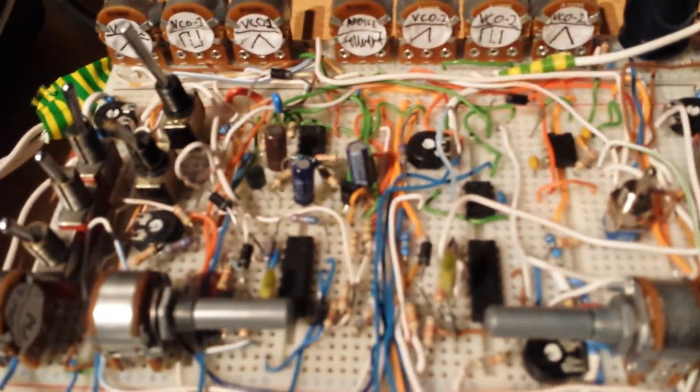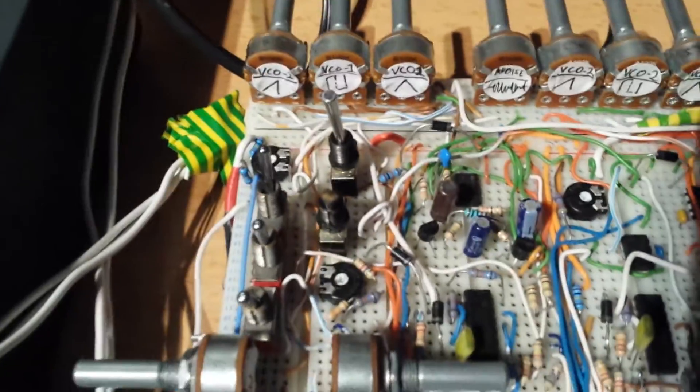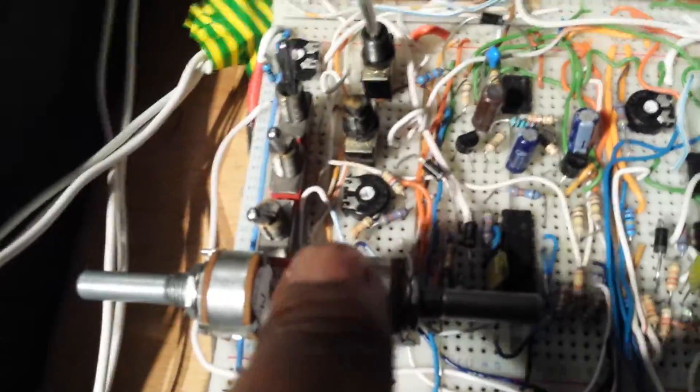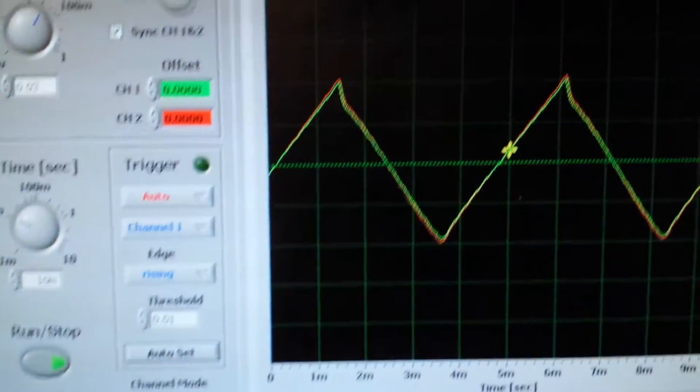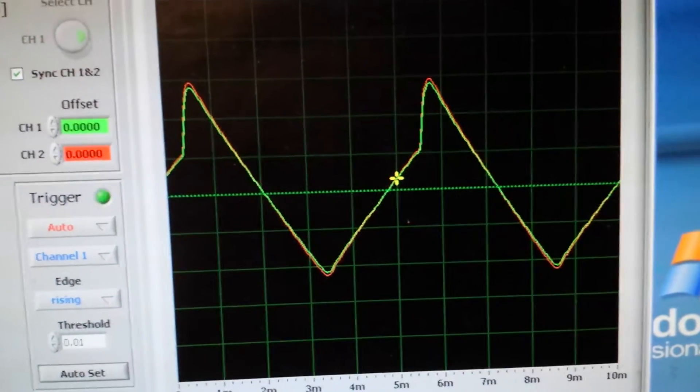So what we have here is a trimmer, let's find it over here, which basically goes to the plus rail and the minus rail and we still have our other trimmer in from the triangle wave. Now if I adjust, that's going to be that first trim that I've just been talking about, is the voltage offset.